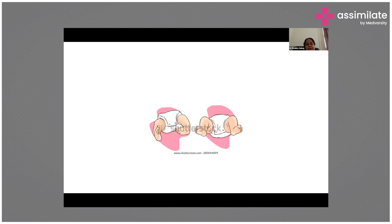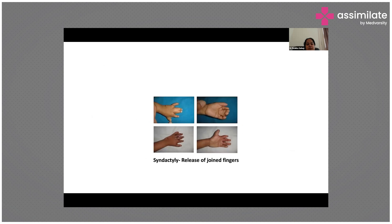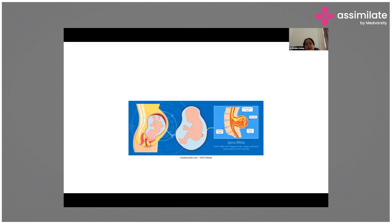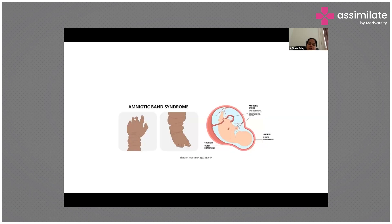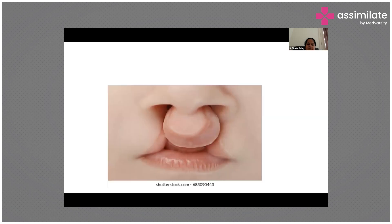Now looking at some pictures: these show clubfoot before and after release, syndactyly before and after surgical release, spina bifida which is very common in India with many patients, amniotic band syndrome where the band wraps around like a mummy, and cleft lip and palate.